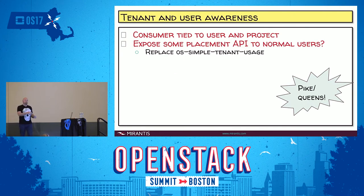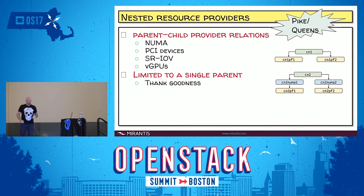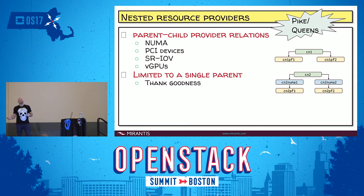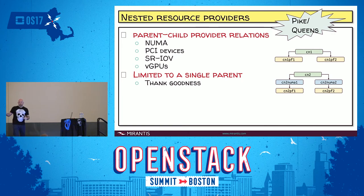Tenant and user awareness — we're trying to get the consumer, which is generic, associated with a user in a project. This will allow us to replace things like the OS simple tenant usage command and give people a quick, efficient view of resources in the cloud. Nested resource providers — a big thing for SRIOV and NFV. The key part of nested resource provider modeling is handling NUMA topology and SRIOV physical function and virtual function relationships. We'll try to do some work on this in Pike, but it'll more likely be completed in Queens as it's dependent on a couple other things.